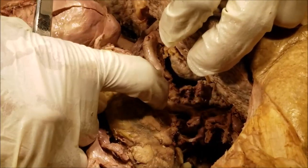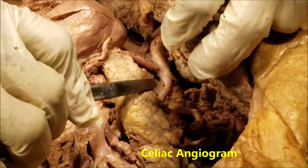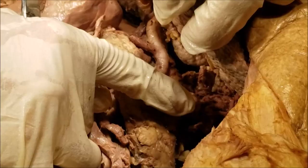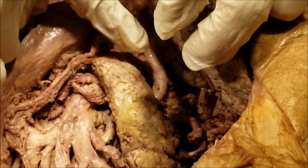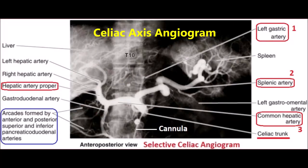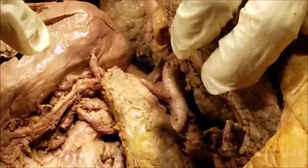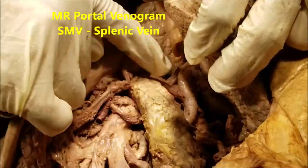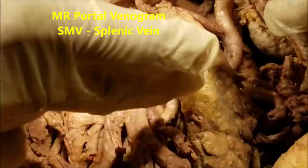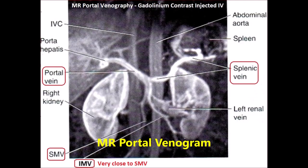The celiac artery can also be visualized by the procedure known as a celiac axis angiogram, where we cannulate the femoral artery, catheterize to the abdominal aorta, inject radiopaque contrast, and take images to see the left gastric artery, the hepatic artery, and the splenic artery. This is a still shot of a selective celiac axis angiogram showing its branches. Similarly, the portal vein can be demonstrated by a portal venogram or MR portal venogram, showing the distribution of the portal vein and its forming tributaries — namely the splenic vein and the superior mesenteric vein. This is an image of a magnetic resonance portal venogram.